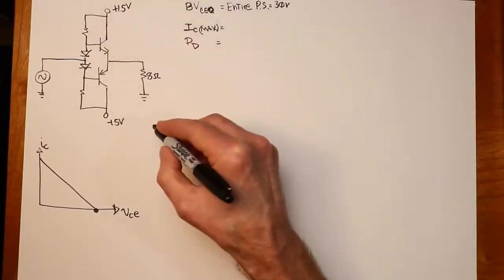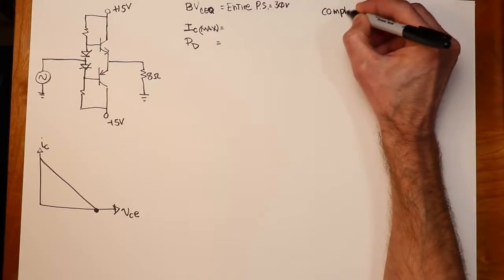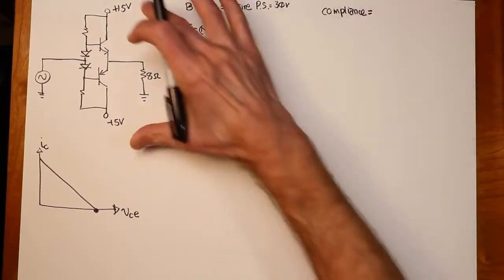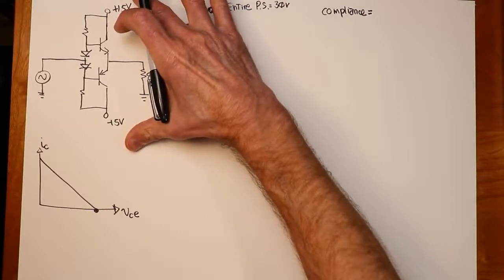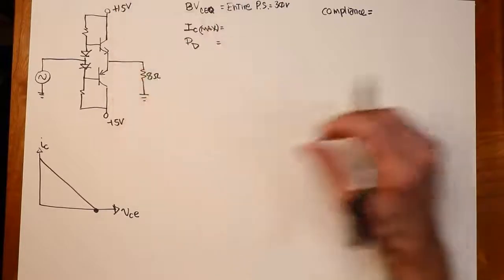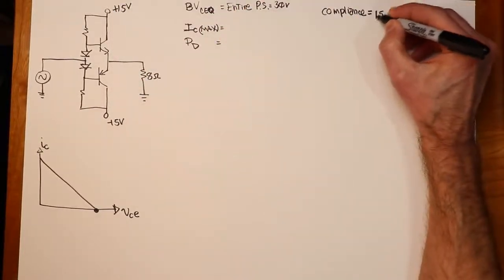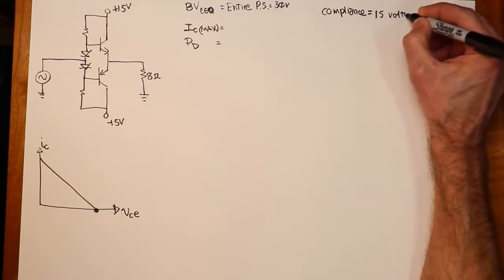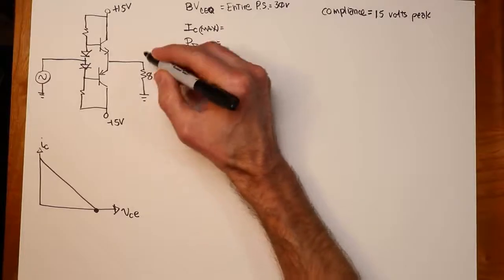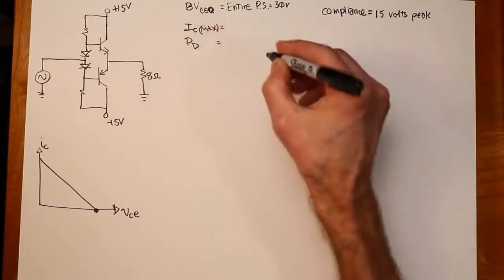So let's say we have an 8 ohm resistor out here. Now, the compliance on this thing, remember, that's the peak-to-peak compliance is the full power supply, right? The peak compliance is equal to the single power supply over here. So the compliance on this thing is equal to 15 volts.